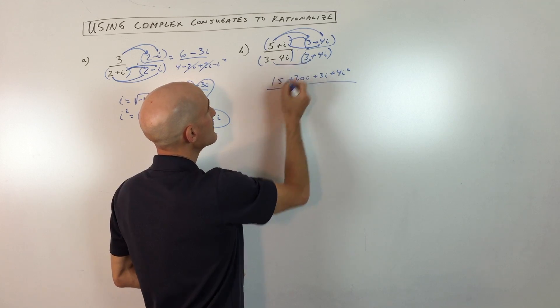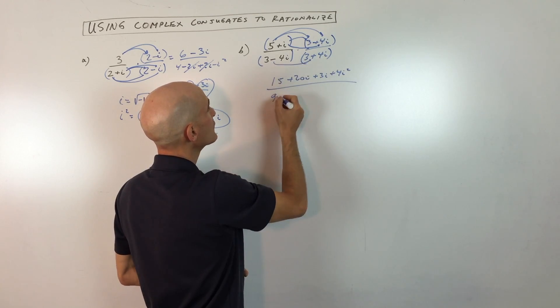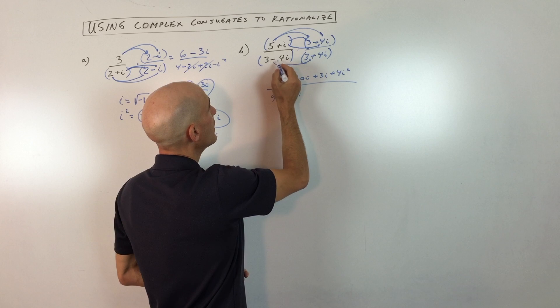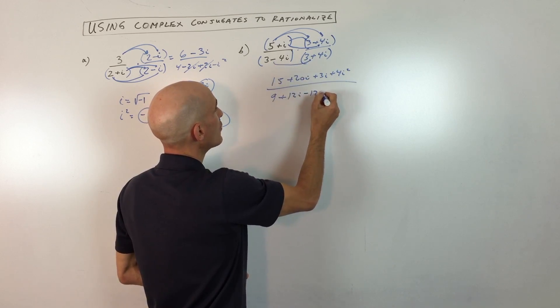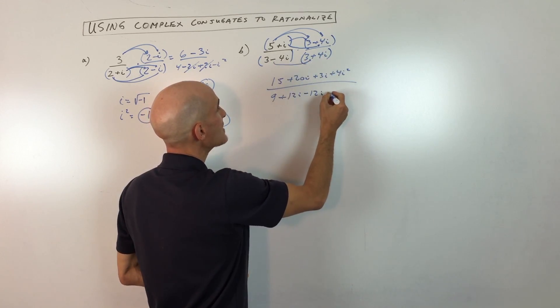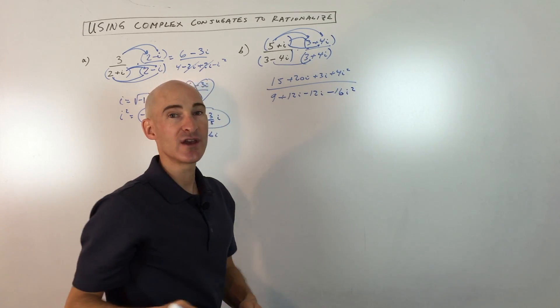All divided by three times three, which is nine, three times four i, which is 12i, negative four i times three is negative 12i, and negative four i times positive four i is negative 16i squared.